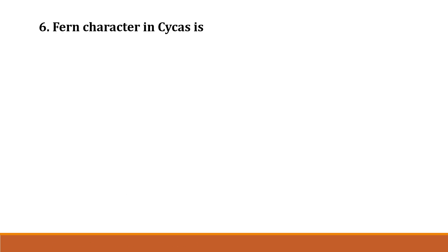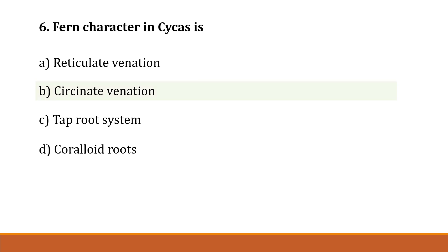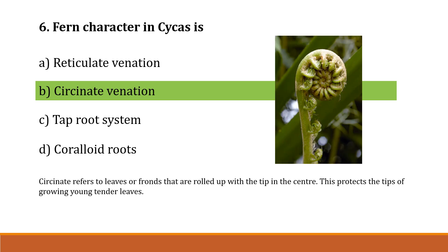Question number 6: Fern character in Cycas is Option A: reticulate venation, Option B: circinate venation, Option C: tap root system, Option D: coraloid roots. Correct answer is Option B, circinate venation. Circinate venation refers to leaves or fronds that are rolled with the tip in the center. This protects the tip of growing young tender leaves — tender meaning soft leaves. When rolling up, it protects the young leaves.